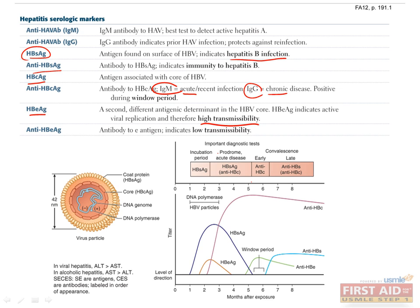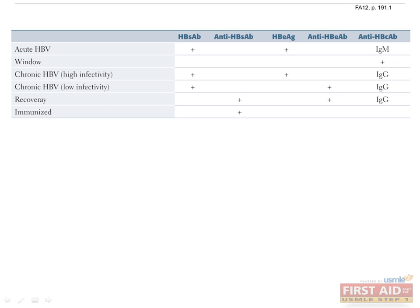Looking at the graph showing the timeline for when certain serological markers develop in the blood: around five to six months after exposure, there exists a window period where a host has been infected by hepatitis B virus and is successfully clearing the virus. However, the host has not yet begun forming anti-hepatitis B surface antibodies, so the only serological evidence for HBV is the presence of hepatitis B core antigen antibodies. This is the only time when a person infected with HBV will not show hepatitis B surface antigen in their blood.